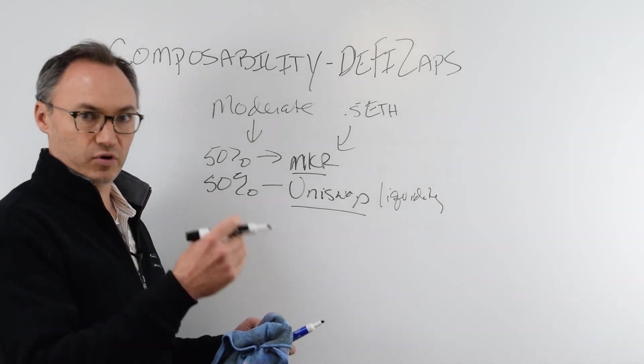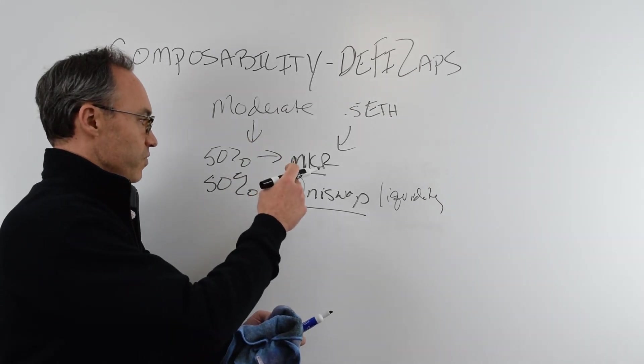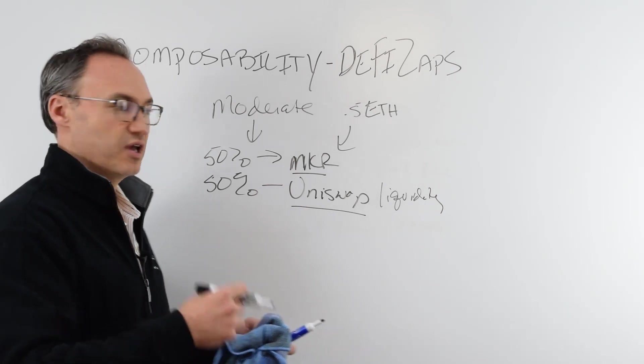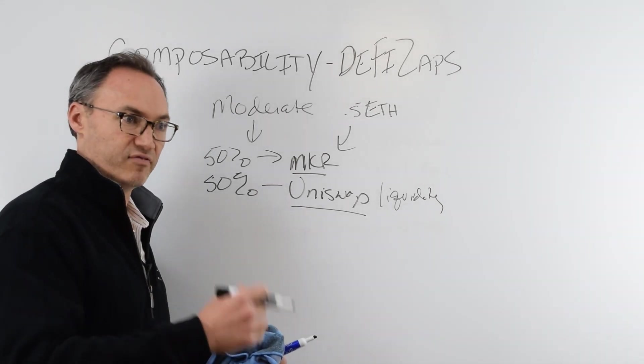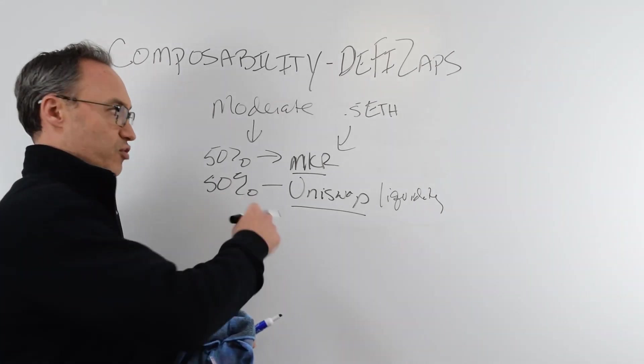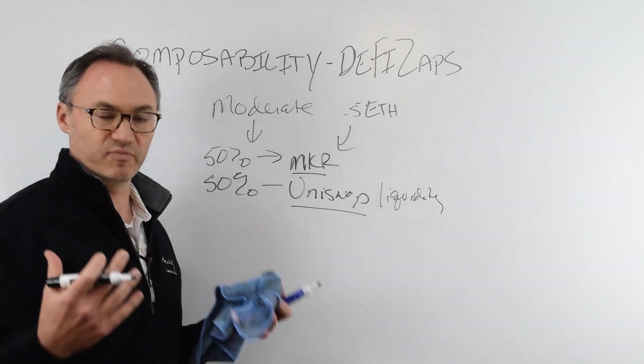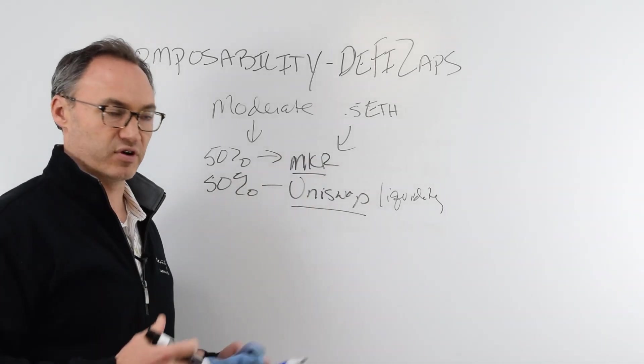But next week or the week after or so, as Nodar tells me, there's going to be the ability to have anti-zaps. And the anti-zap is basically going to show you what you already have and then you click another button and the transactions will essentially reverse themselves. So you can identify, okay, I've made some money or I've lost a little bit. Now I'm going to get out of this transaction.